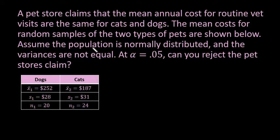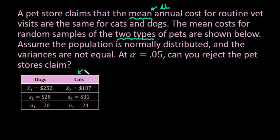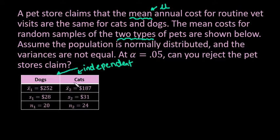This is going to be a two-sample t-test. Number one, we are dealing with a mean, so anytime we're dealing with a mean we're either going to deal with a t-test or a z-test, and that means when I set up my null hypothesis I'm going to use mu as my symbol for the mean. I know it's a two-sample t-test because we're comparing two types of pets — cats and dogs — and cats and dogs are independent of each other. If you have dependent samples, like a before-and-after such as shooting free throws before and after practice, that would be dependent and you would do a different test. But for this one, because dogs and cats are independent, we are going to use a two-sample t-test.